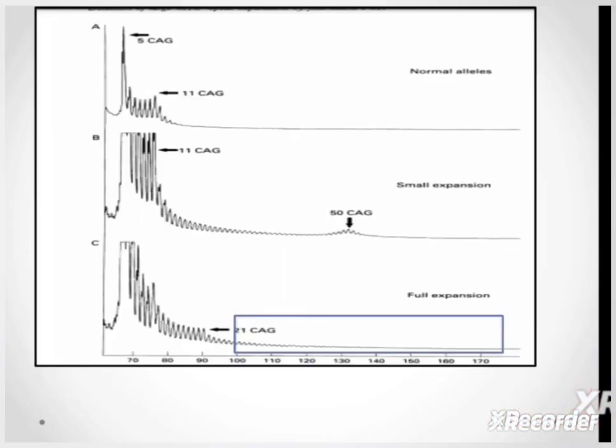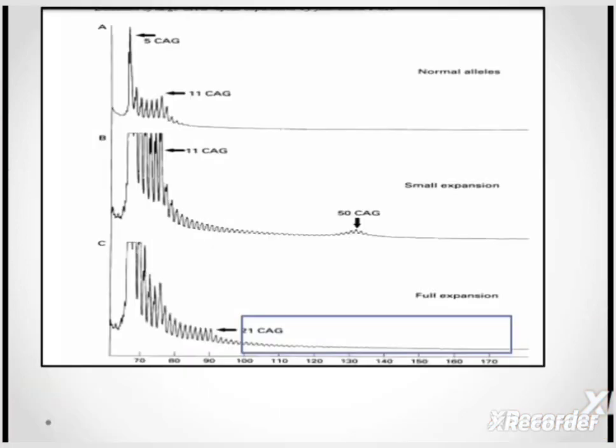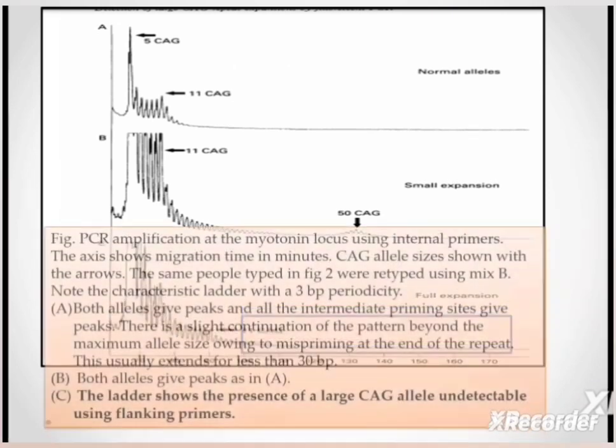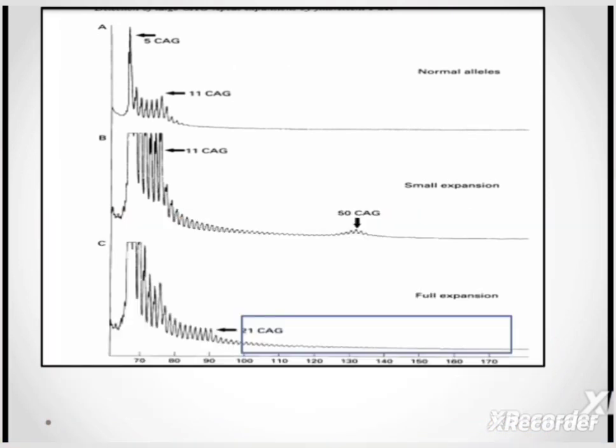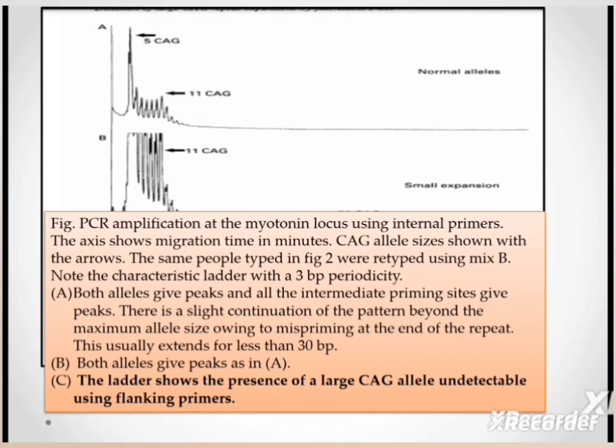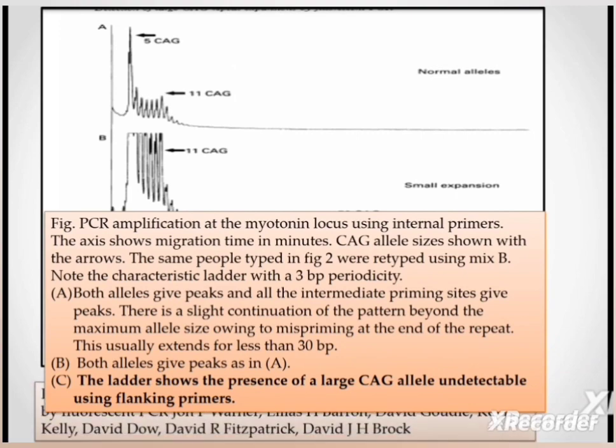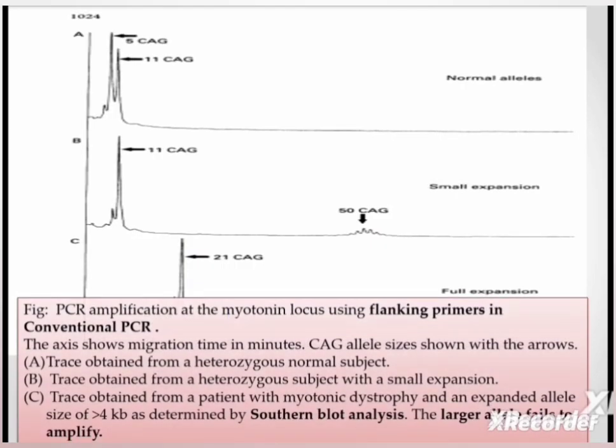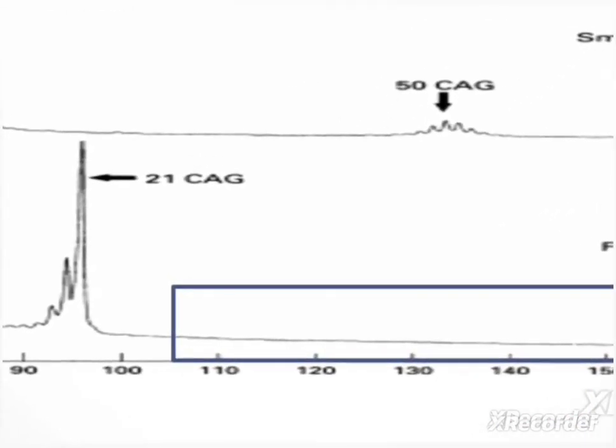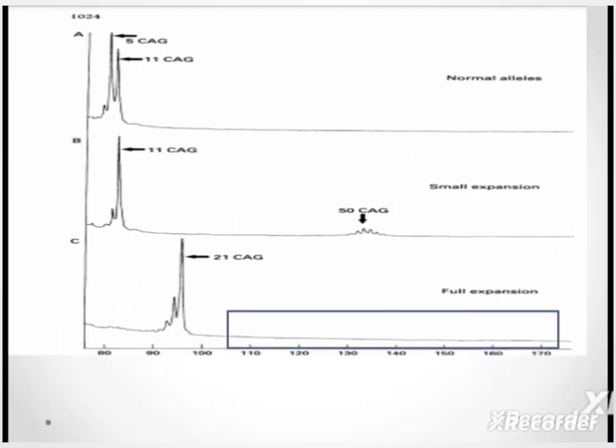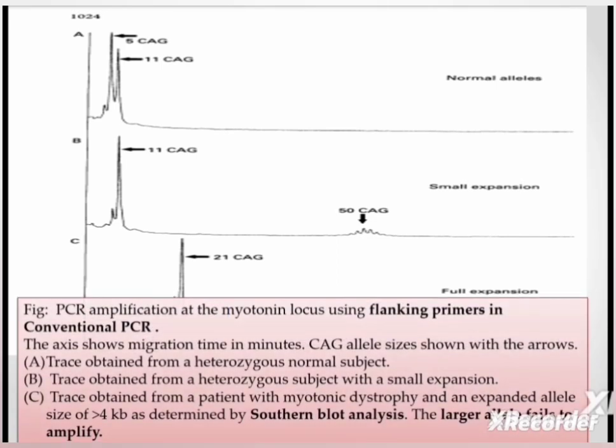This is another example of PCR amplification at the myotonin locus using internal primers. Here we can observe a ladder motif in the full expansion as compared to the small expansion or the normal allele. The ladder shows the presence of CAG alleles which were undetectable using the flanking primers which were used in conventional PCR. Triplet primed PCR overcomes the limitations of conventional PCR and the Southern blot assay.